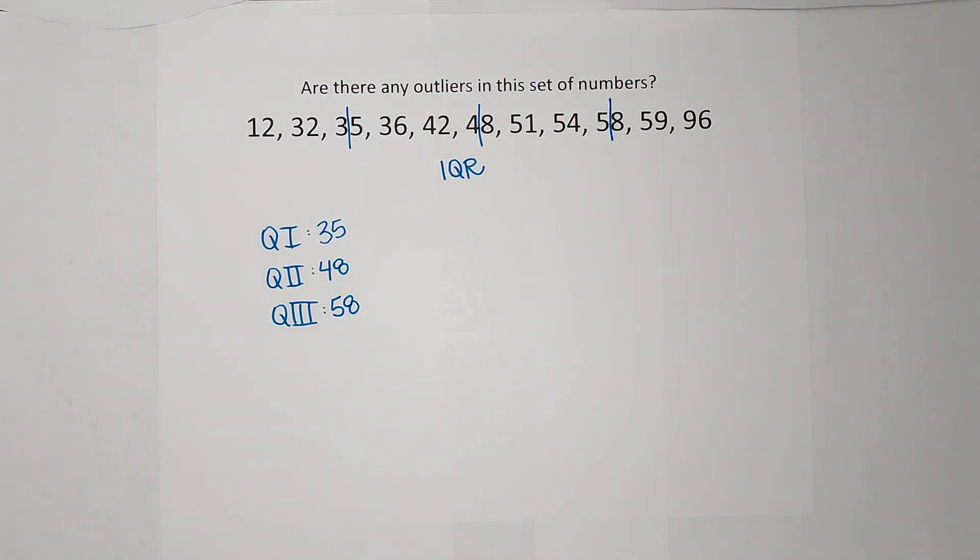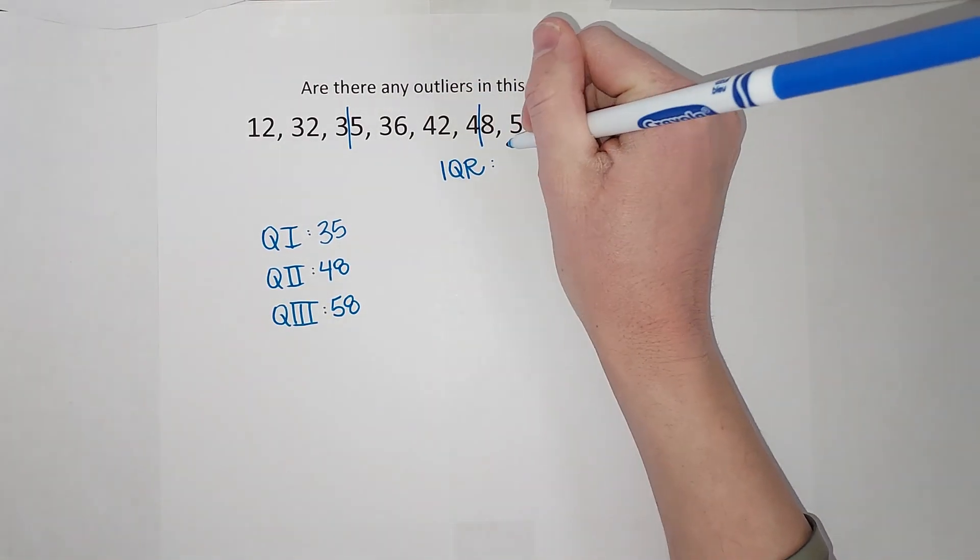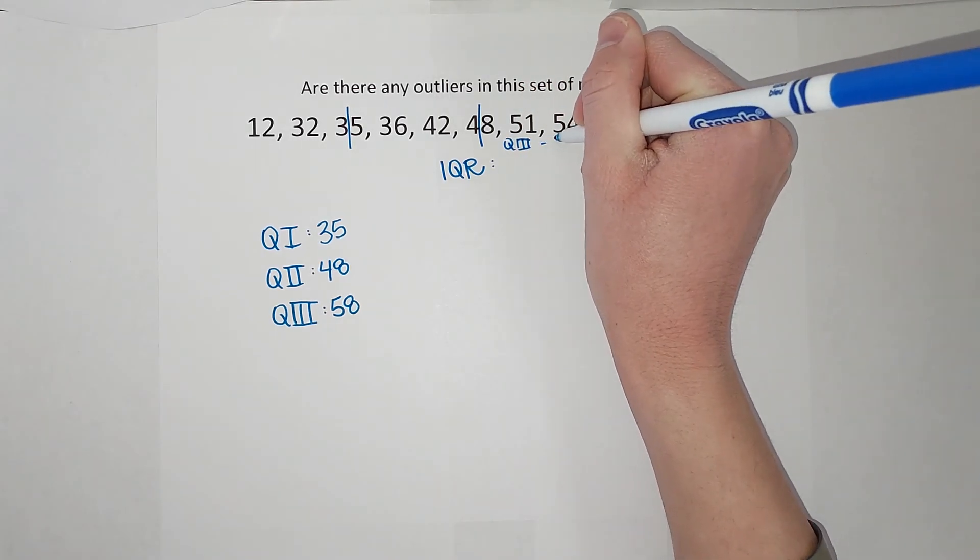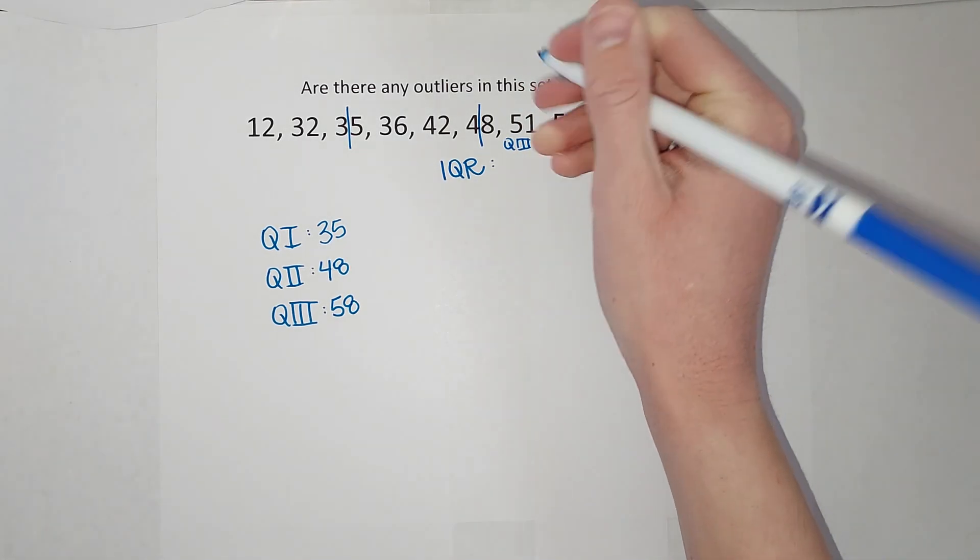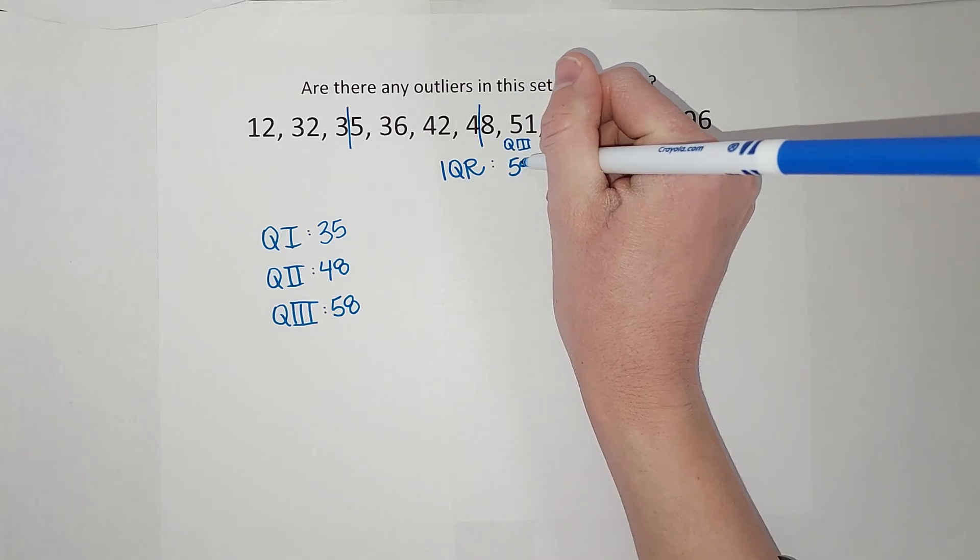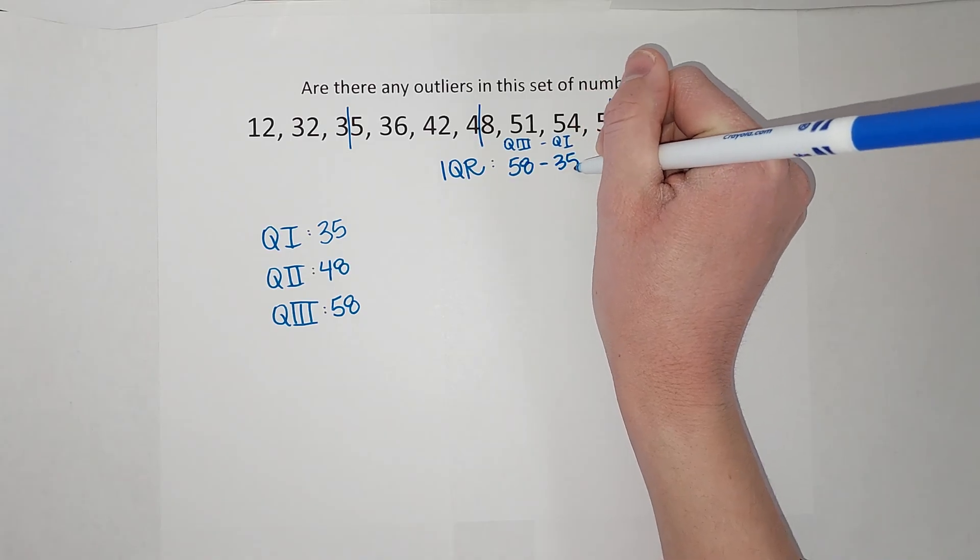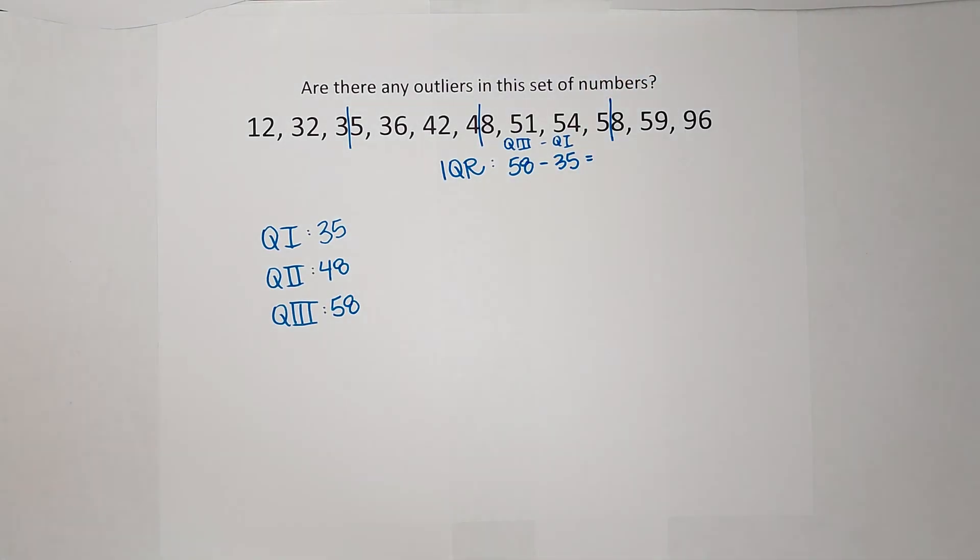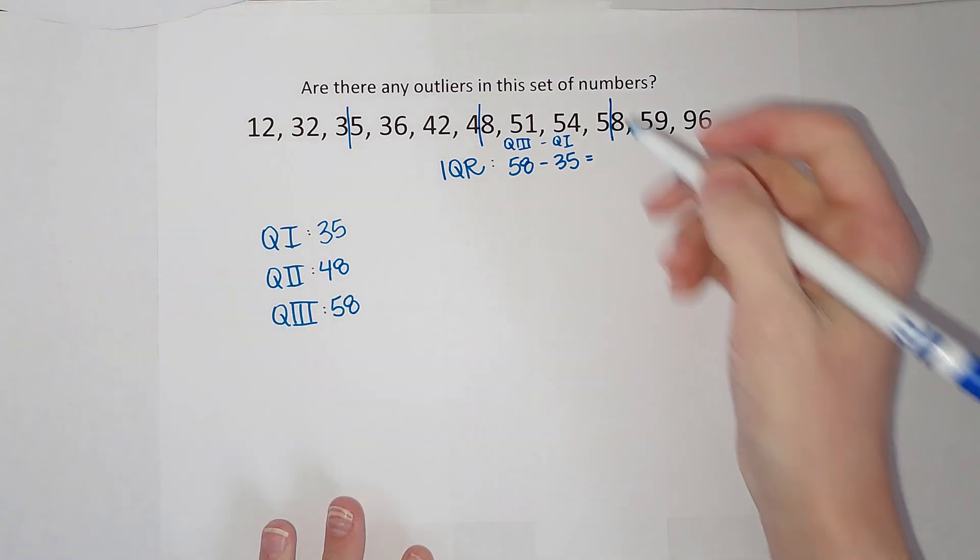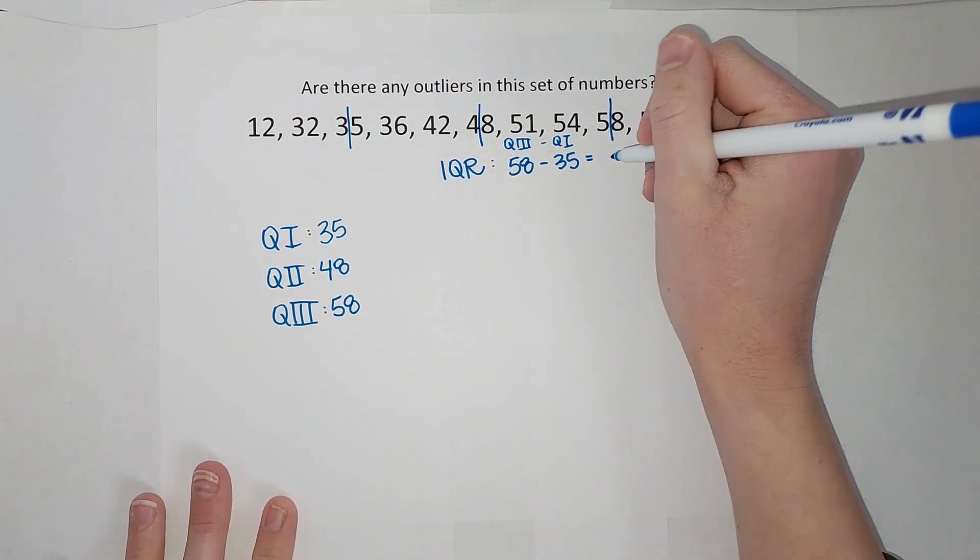So now that I have my quartiles, I can find my inner quartile range, which is the third quartile minus the first quartile. So 58 minus 35. This is, if you have been doing box and whisker plots, this is the length of the box. So 58 minus 35 gives me 23.